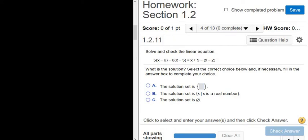Solve and check the linear equation. We have 5(x - 6) - 6(x - 5) = x + 5 - (x - 2).